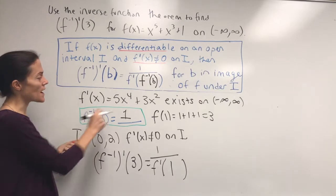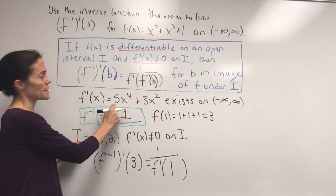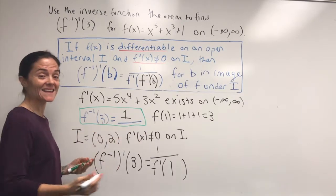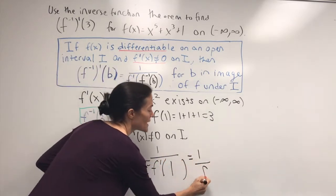Okay, f prime of 1, well, we evaluate. It's 5 plus 3, 8. We get 1 over 8.